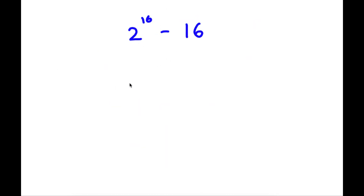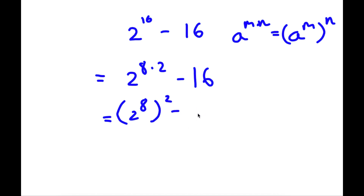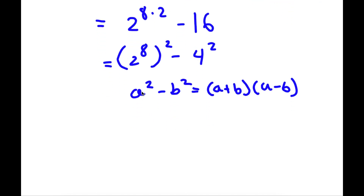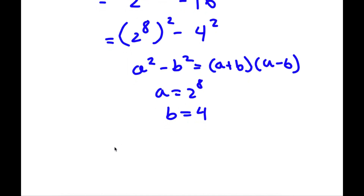Next: 2 to the power of 16 minus 16. Now 16 is the same as 8 times 2, so I have 2 to the power of 8 times 2 minus 16. If I have something in the form a to the power of m times n, this equals a to the power of m to the power of n. So 2 to the power of 8 times 2 equals (2 to the power of 8) squared. And 16 I can rewrite as 4 squared. Now using the difference of squares — a squared minus b squared equals (a plus b)(a minus b) — where a is 2 to the power of 8 and b is 4, I get (2 to the power of 8 plus 4) times (2 to the power of 8 minus 4).